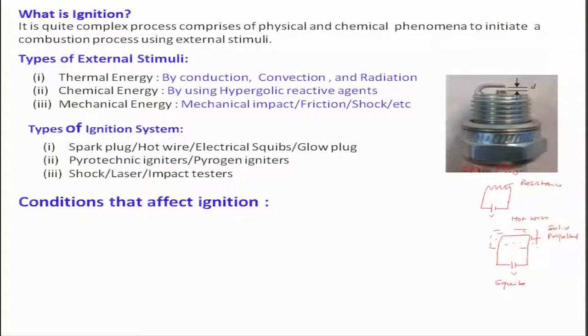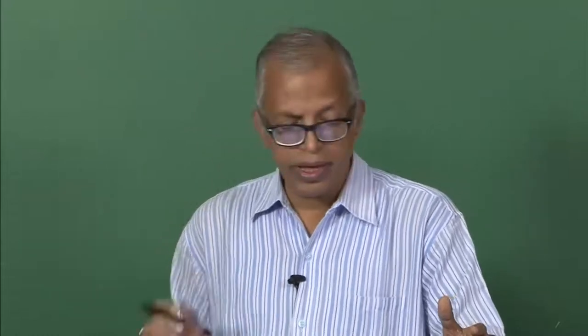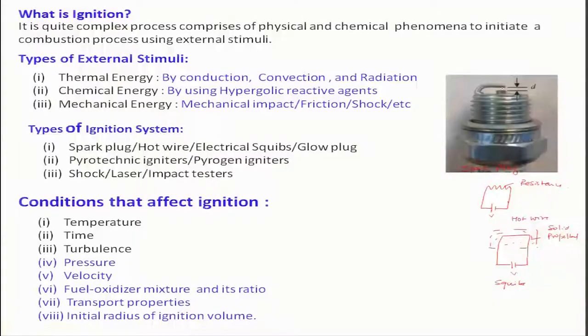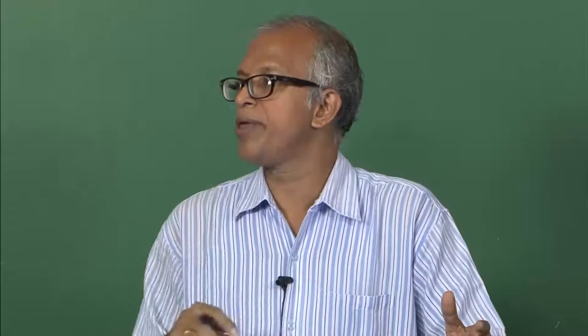Now we will look at what conditions affect ignition — in other words, what variables affect the minimum ignition energy required for initiating combustion. Three important things are the temperature, time, and turbulence. Temperature is very important: when you give a certain amount of energy to initiate combustion, you must raise the mixture temperature to a level beyond the self-ignition temperature. Only then will it be self-sustaining.